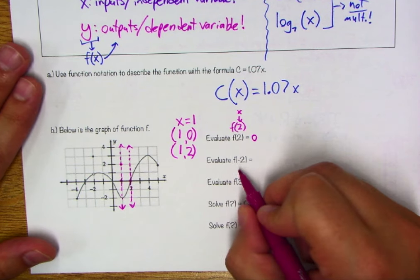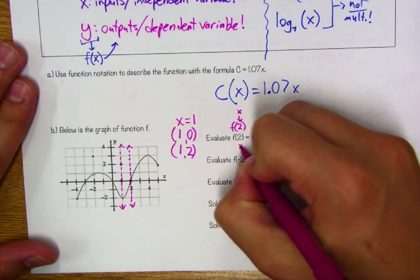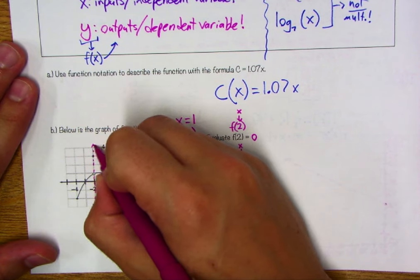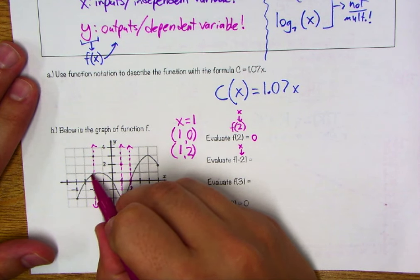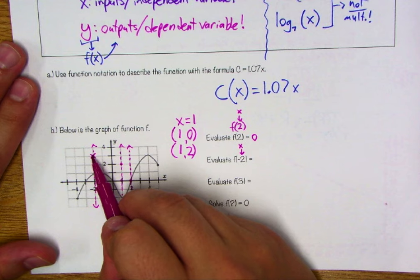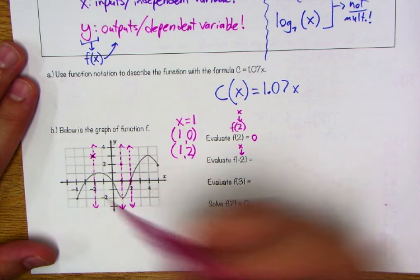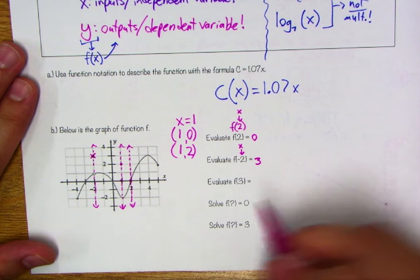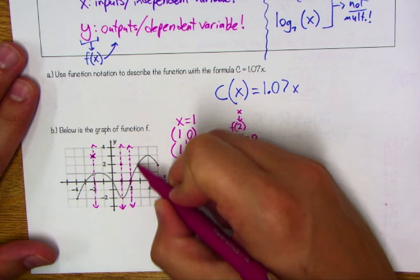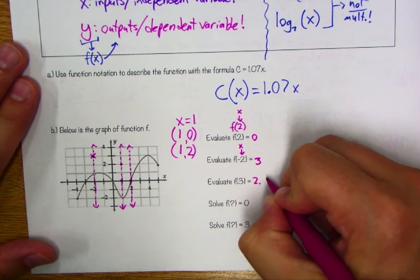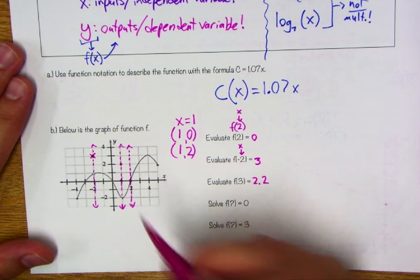Let's do the same thing with F of negative 2. The X value is negative 2 — draw that vertical line. This one's a little weird: you may notice there is a little hole in the graph, and a couple units up there's a defined value. So we're actually crossing at negative 2 with a dependent variable of 3 — our output is 3. Next, evaluate F of 3. The X value is 3, and the dependent variable appears to be just a little above 2, so let's call it approximately 2.1 or 2.2.